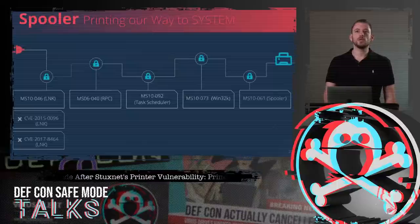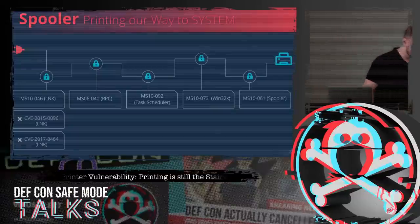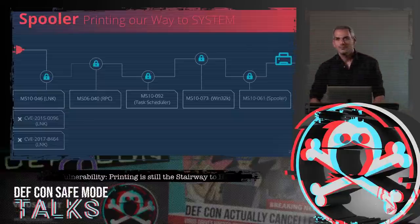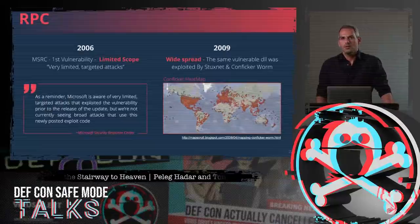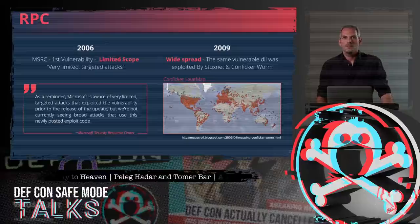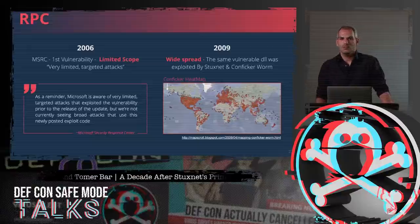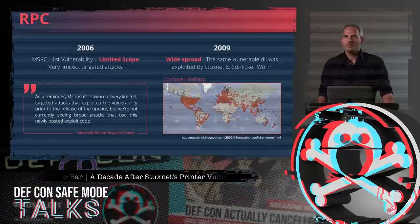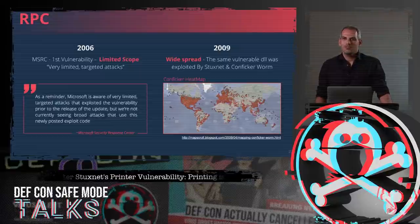Moving to the next propagation capability — the Stuxnet RPC vulnerability. In 2006, three years before Stuxnet's first infection, a wormable RPC vulnerability was discovered and patched. According to Microsoft, it was a very limited-scope attack back then, but a very similar exploitation path was later used by both Stuxnet and the Conficker worm, which became one of the most widespread worms ever seen. RPC vulnerabilities have been the main cause of global computer worms since 2003 — remember Blaster? The cost of a vulnerability in this mechanism is huge.